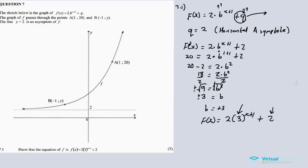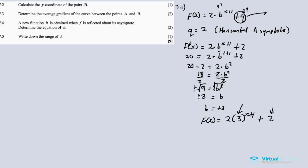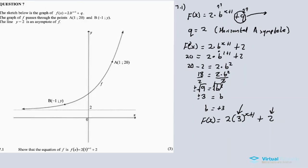7.2. Now 7.2, calculate the y coordinate of B. We are given the coordinate of B, which is minus 1 and y. So we need the y coordinate. This one is straightforward. Where x equals minus 1, so that I can calculate the y.